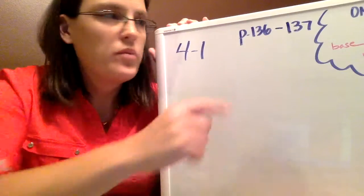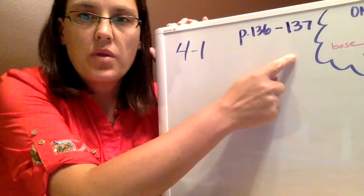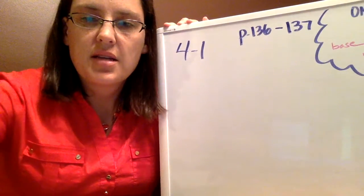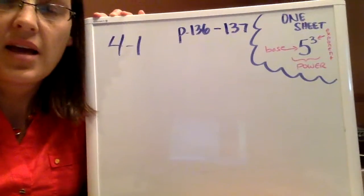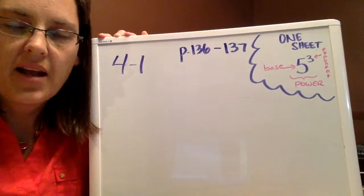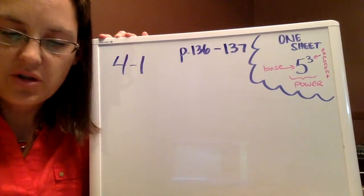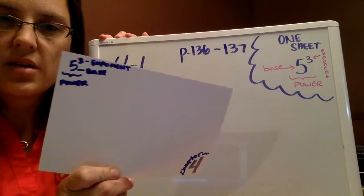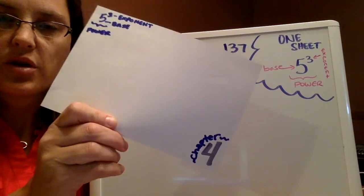For Section 4.1, we're on pages 136 to 137. Something else I want to do with this chapter is encourage you to make a one-sheet. I got this idea from another math teacher who basically takes a sheet of paper, and it's the one sheet where all the information from that chapter goes.